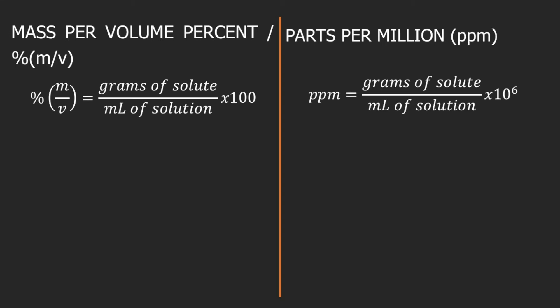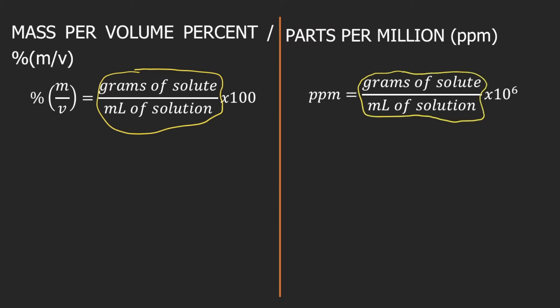Conversion of percent mass per volume to ppm and vice versa is relatively easy. Why? Because both of them have this in their formula — both have grams of solute per ml of solution. The only difference is that for percent mass over volume, you multiply by 100, and for ppm, you multiply by a million.